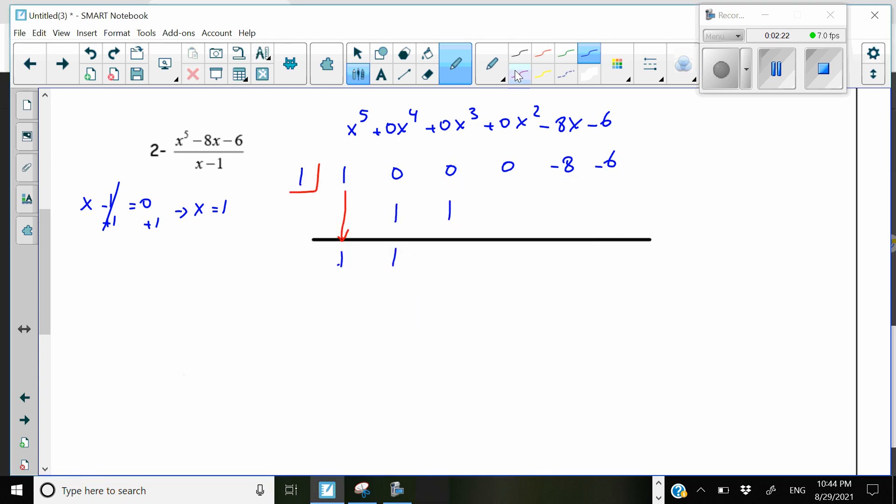Next again we're going to add these two. 0 plus 1 is 1. Again, 1 multiply by the corner number again, it's 1.